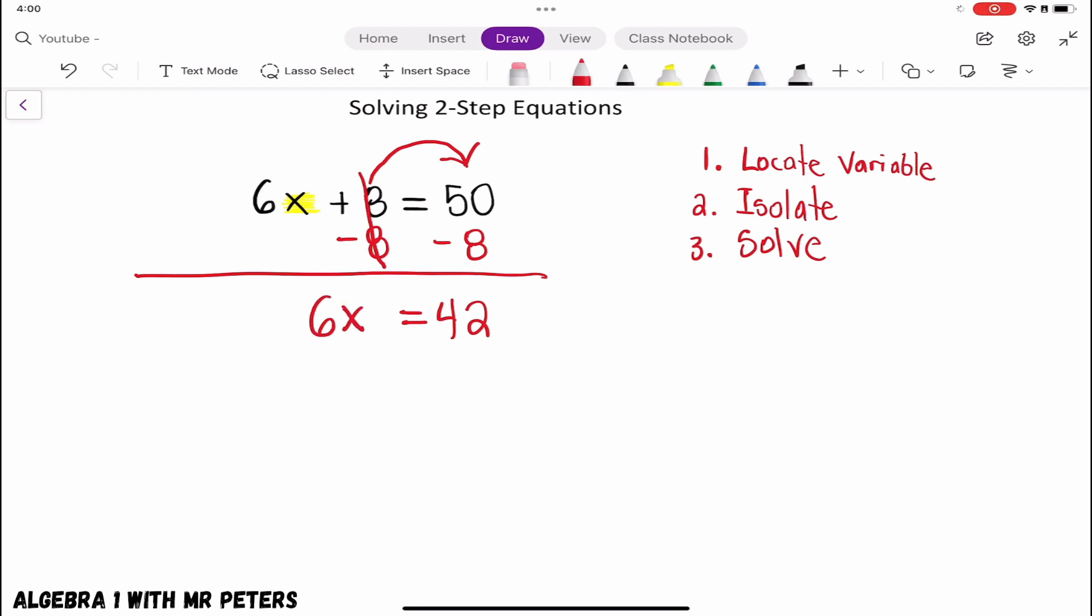So at this step now guys, this is our second and final step. It's saying, hey, you're going to multiply 6 times a number and get 42. So we're going to think the opposite of multiplication.